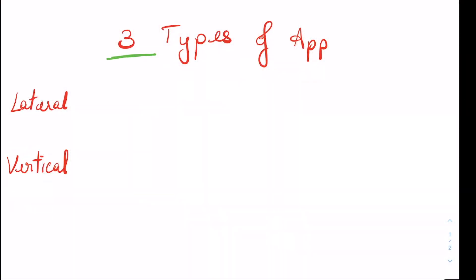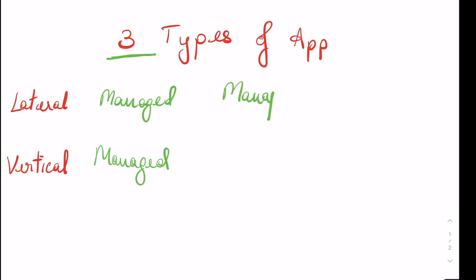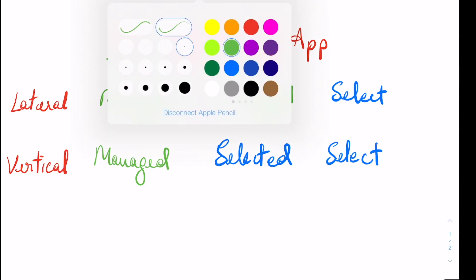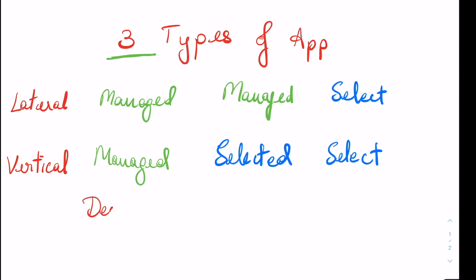So let's go to the simulator and discuss the types of approach and how we can execute them. We have three types: the first is fully managed — laterally and vertically managed, controlled by the FMS. The second has lateral managed and vertical selected, where we select the FPA on the FCU. The third is fully selected, where you select a track for lateral and an FPA for vertical. The fully managed approach can be a decelerated approach; the other two must be an early stabilized approach.